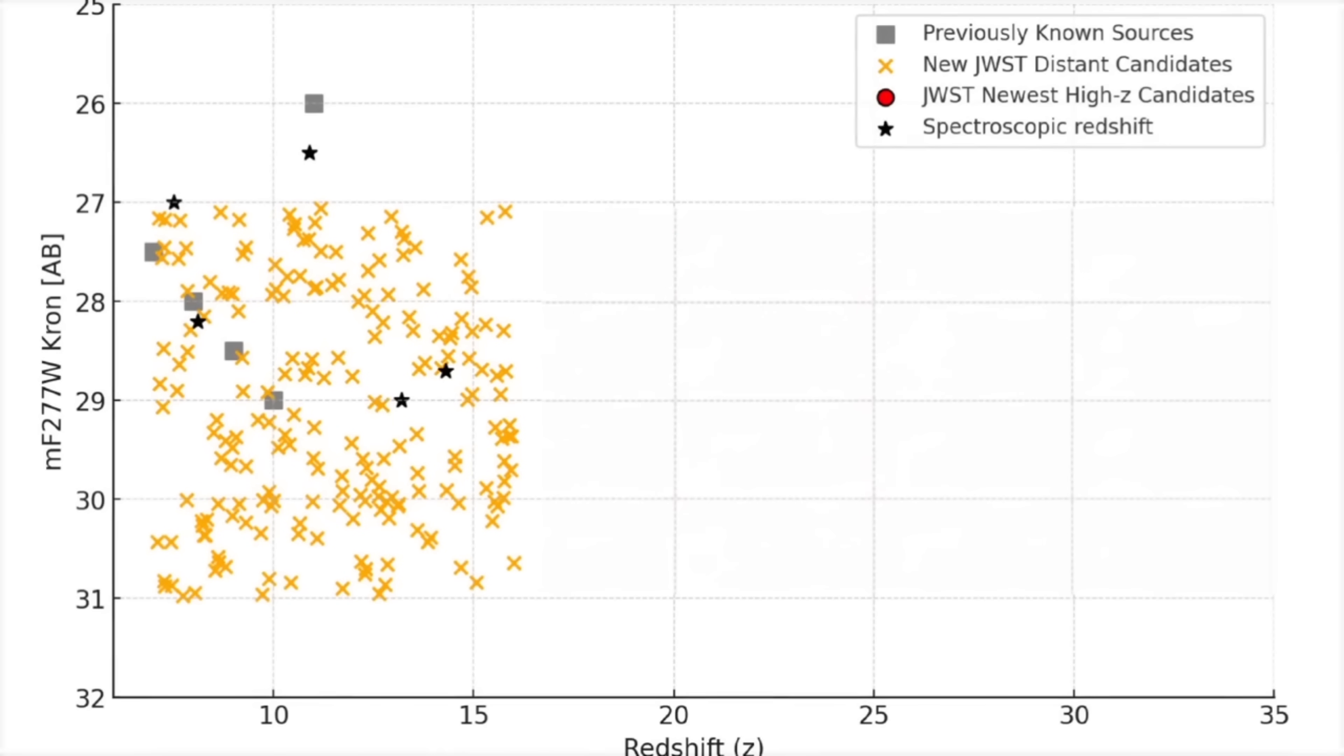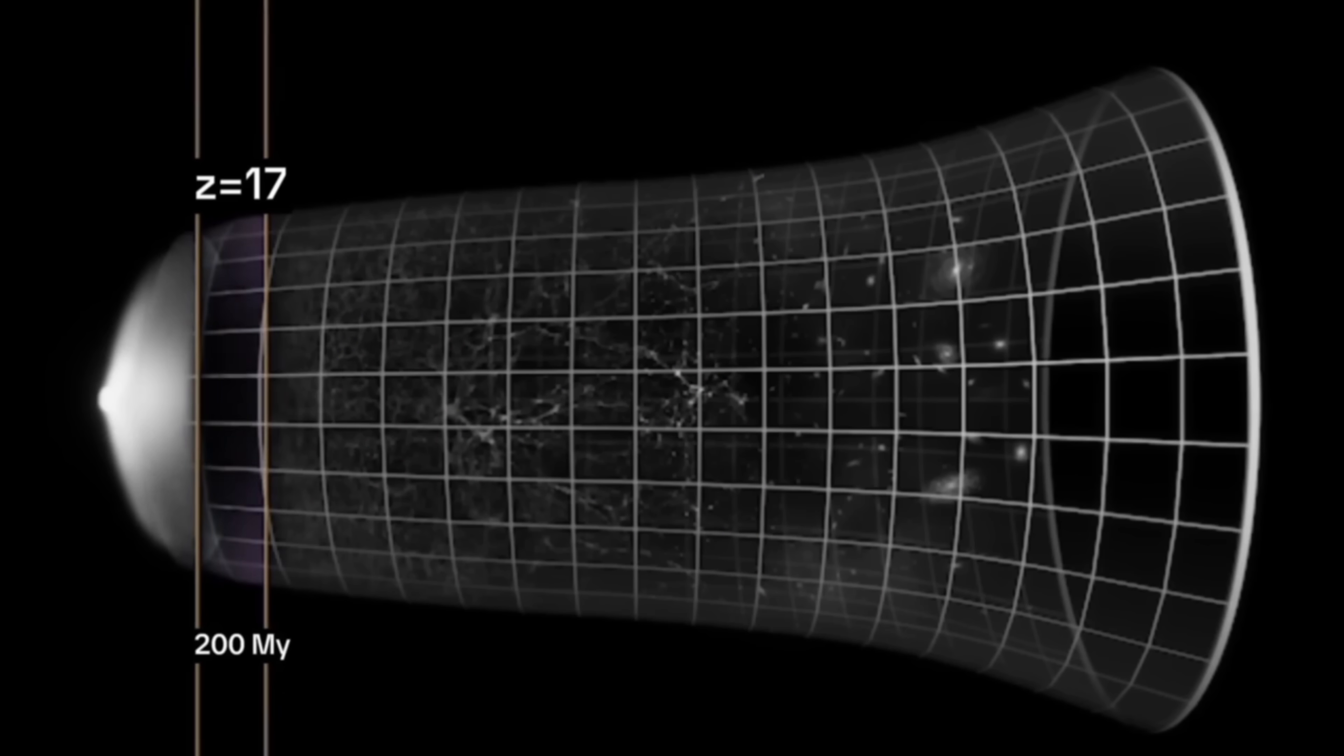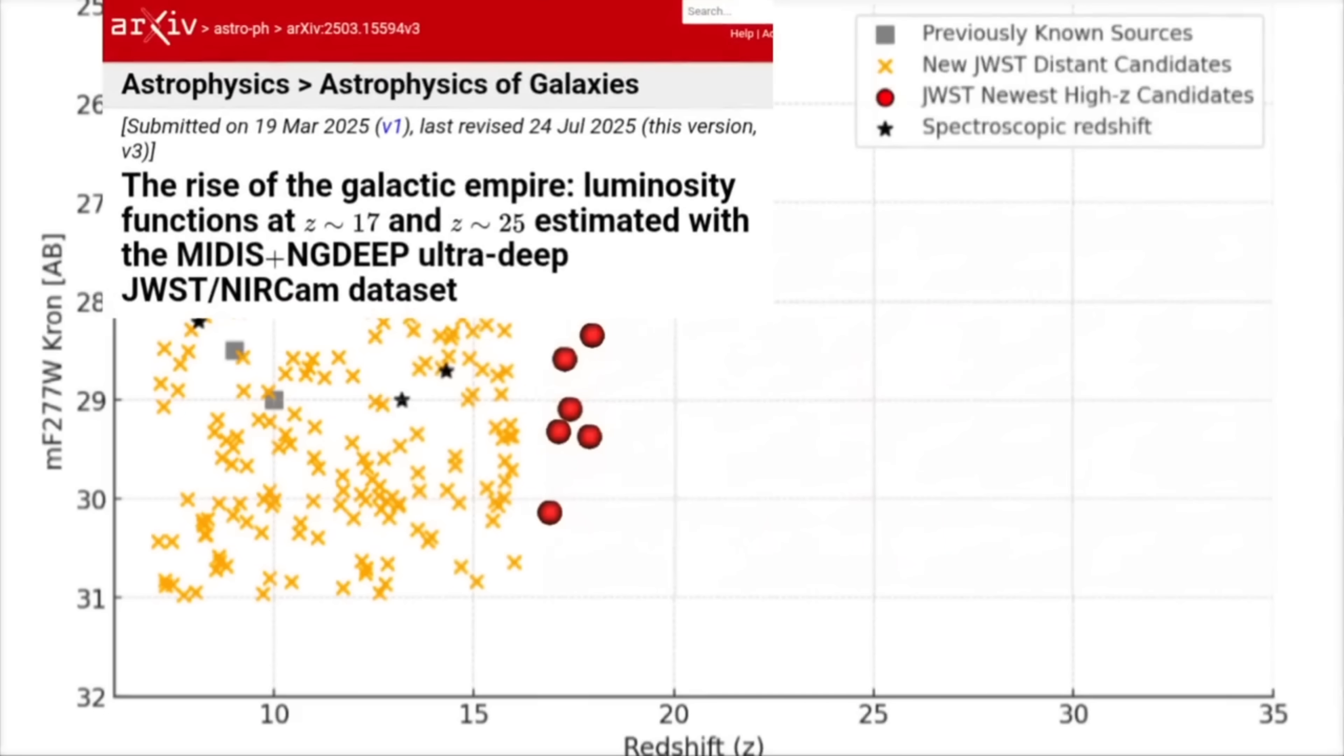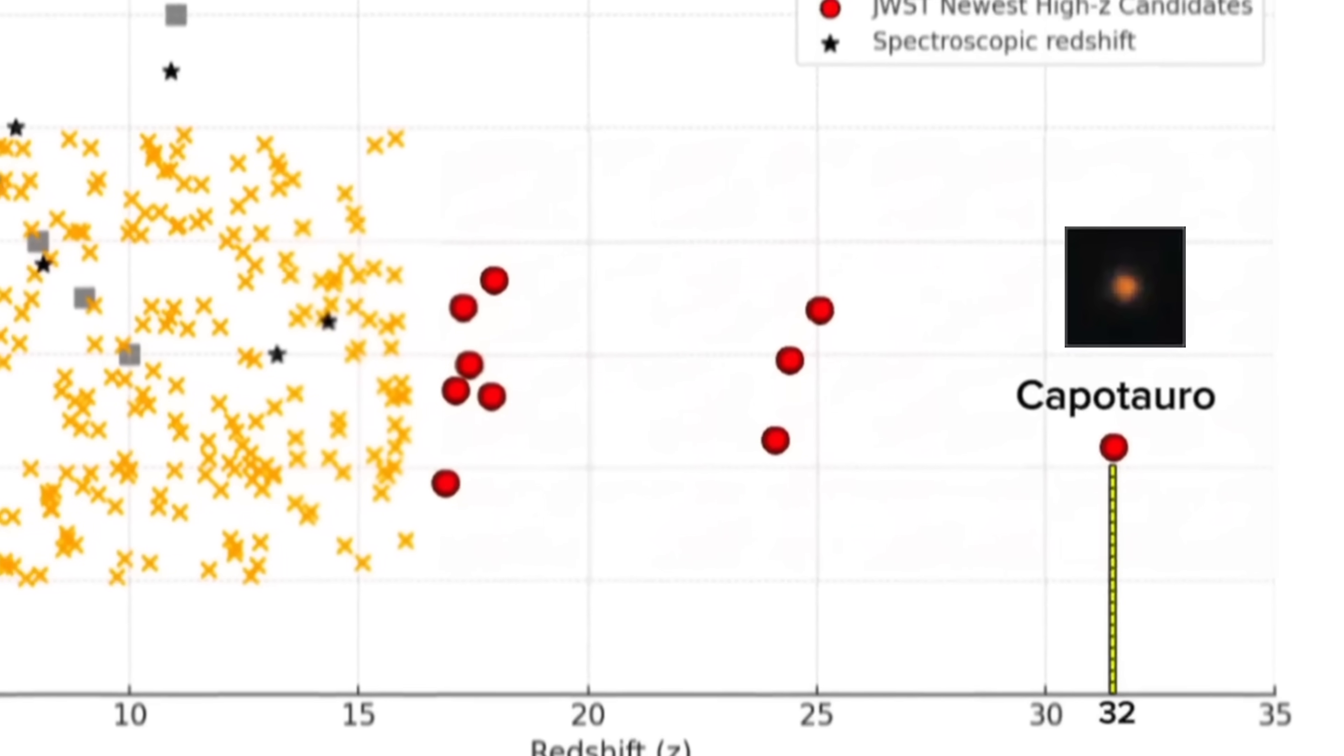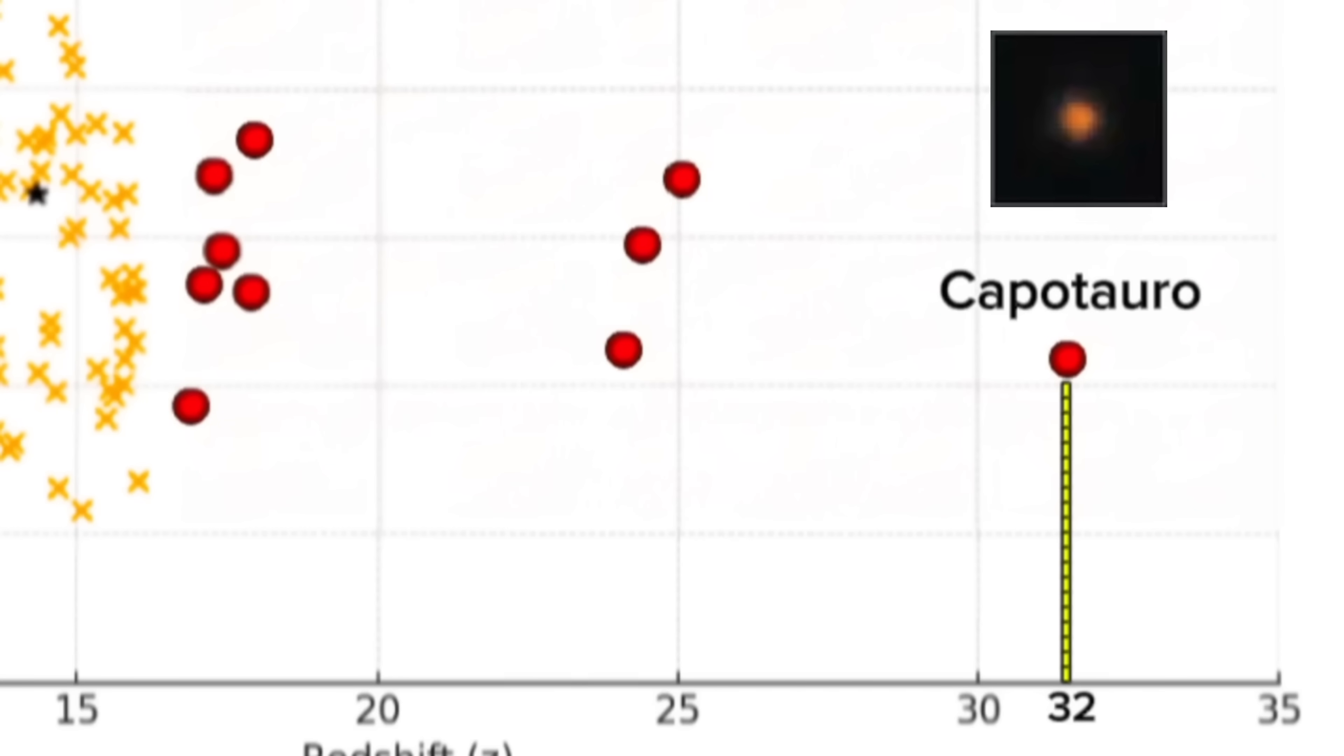Recent Webb Telescope data has revealed several surprising discoveries, including galaxies at Redshifts between 17 and 20, which take us farther back in time than any previously observed galaxies. It found six galaxies at Redshift 17, three galaxies at Redshifts 24 and 25, and an extraordinary galaxy at an unprecedented Redshift of 32. Finding a galaxy at a Redshift of 32, which corresponds to roughly 98 million years after the Big Bang, would seriously challenge our standard cosmological models.